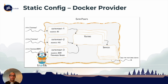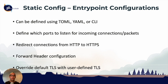We can define exactly what we want to come into Traefik. For example, HTTP traffic comes to address port 80, HTTPS goes to address 443, so we can define each entry point exactly how we want. We can also apply rules within an entry point — for example, rewriting an HTTP request to HTTPS. Entry point configurations can be defined in TOML, YAML, or command line arguments, and we define which ports to listen for incoming connections.